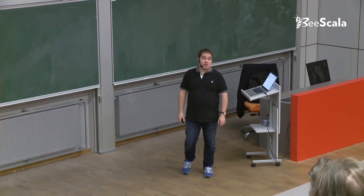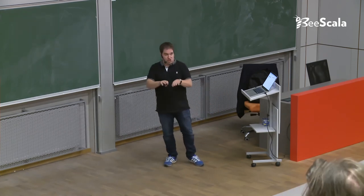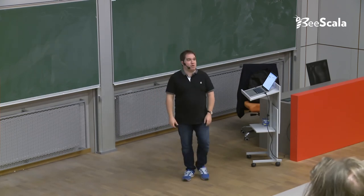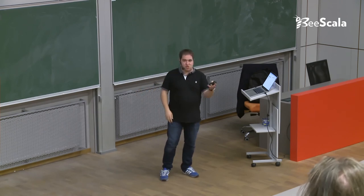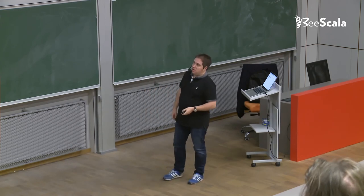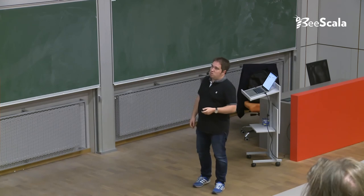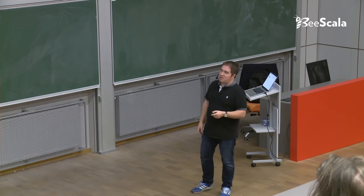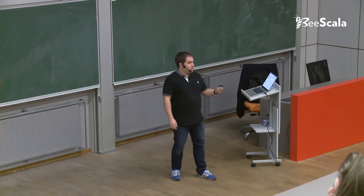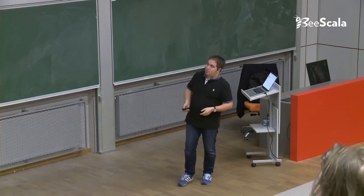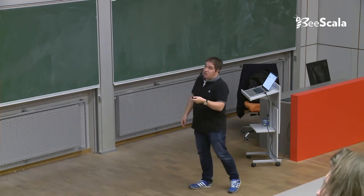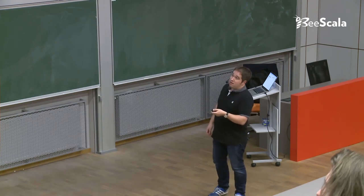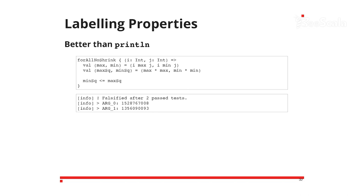As well as labelling generators, you can label properties as well, which is actually a much better idea than putting in a print line throughout your tests. Say we want to test this property: if we've got two numbers, the square of the bigger number should be bigger than the square of the smaller number — a property that should hold. For some reason that doesn't work. It would be nice if we knew what numbers we were working with during the property check. We can apply a string using this function, similar to the generator label but applied on the property, including the input values and the calculated values. When it fails, we have a lot more information to go on — I assume this fails because we multiplied numbers that exceed the integer range.